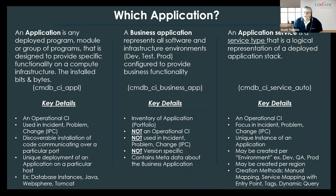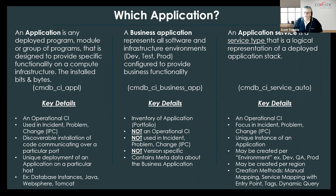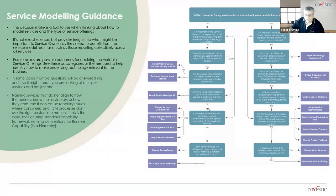The application service is that logical representation of a deployed stack of things that provides that functionality. It's usually what drives our map and is contained in the CI service auto table. Coming up, I think next week, Justin is going to show how to use the new service creator app — and application services are what that's creating. That's the deployed stack of things, like my production SAP deployment and all the things that go into that. Application services are a big part of CSDM and business service mapping.